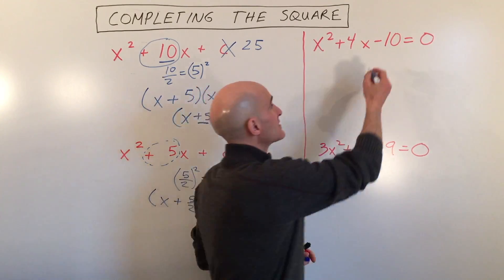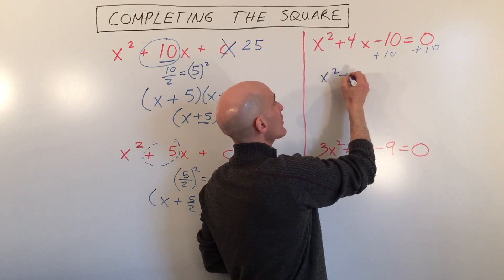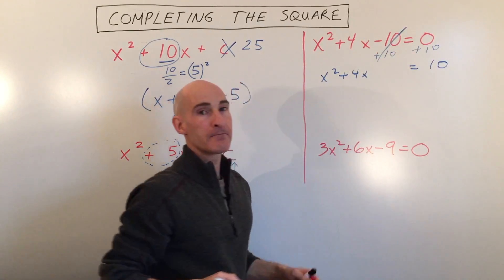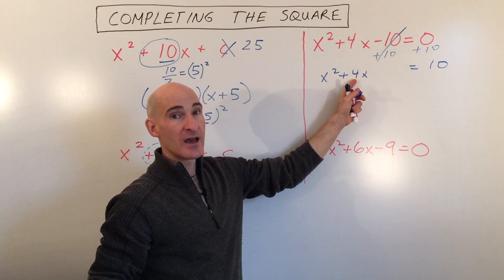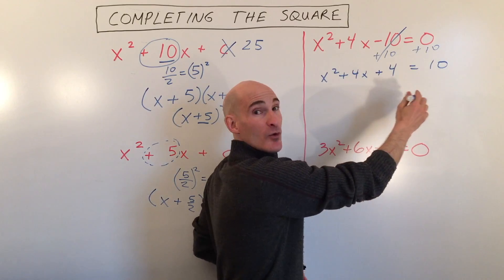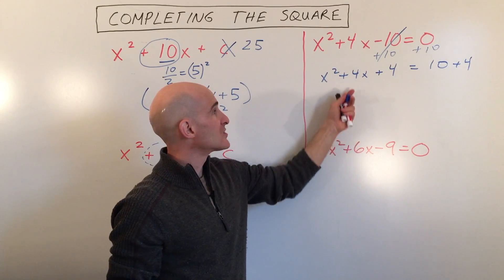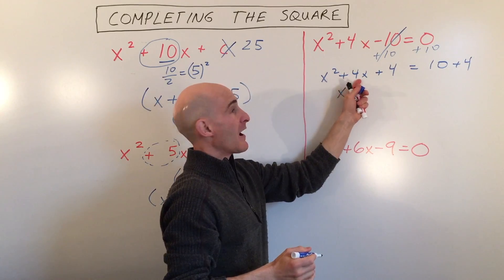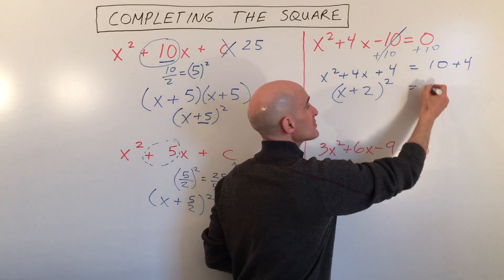Let's add 10 to both sides. Now we have x squared plus 4x equals 10, because these cancel each other out. We're going to take half of that middle coefficient — the number in front of the x. Half of 4 is 2, and 2 squared is 4. We're going to add 4 to the left side of the equation, and also add 4 to the right side to keep it balanced. When we factor the left side, we get x plus half the middle coefficient — so half of 4 is 2 — the quantity squared equals 14.